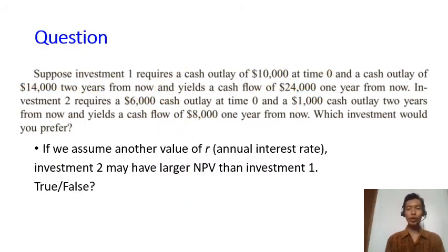Now let me ask you a question. For the same problem, if we assume another value of r, which is not point two like you've seen before, investment two may have larger NPV than investment one. Is this statement true or false? I will give you the answer after the pause of the video.